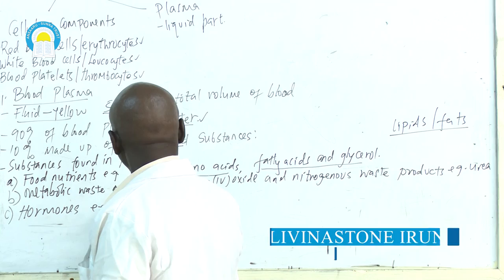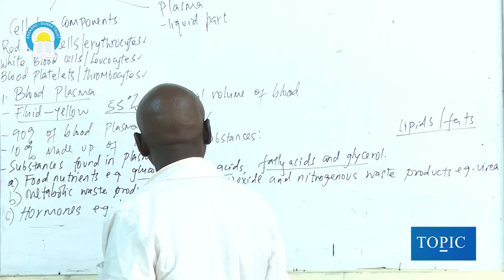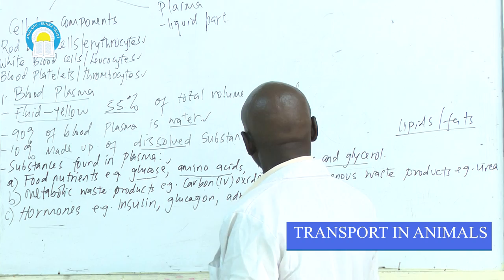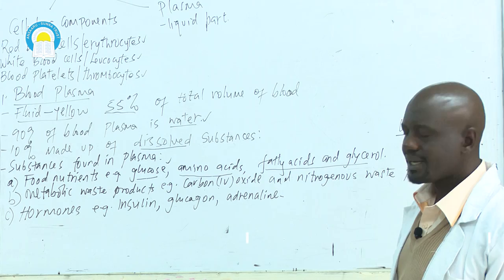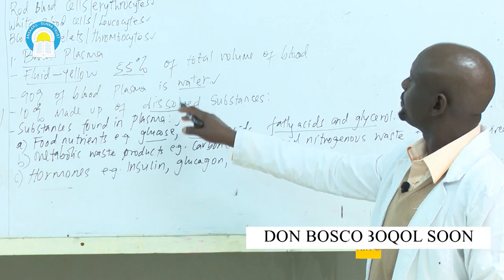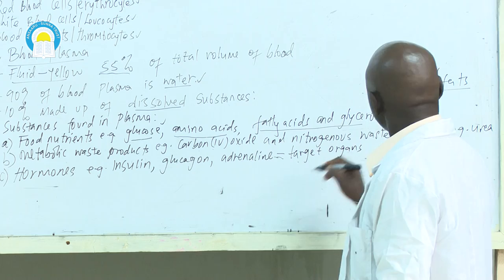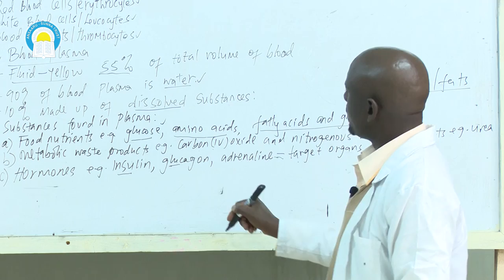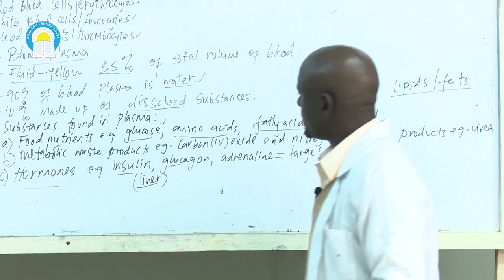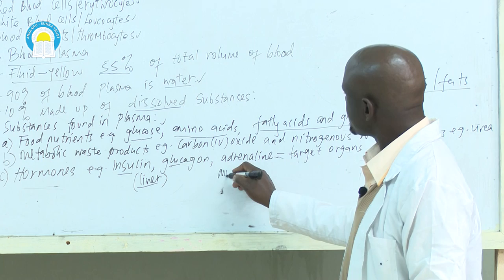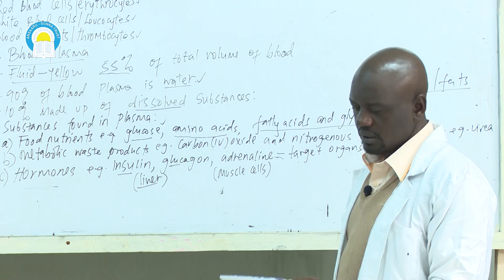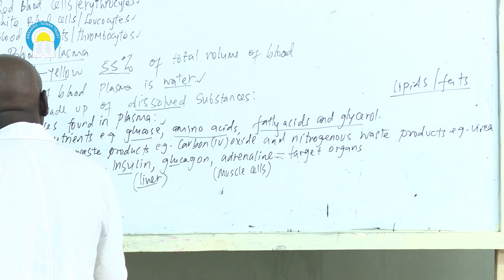Another substance found in plasma is hormones. Examples include insulin, glucagon, and adrenaline. After hormones are produced, they are released into the bloodstream, dissolve in the plasma, and are taken to their target organs. For example, the target organ of insulin and glucagon is the liver, while the target of adrenaline is the muscle cells.